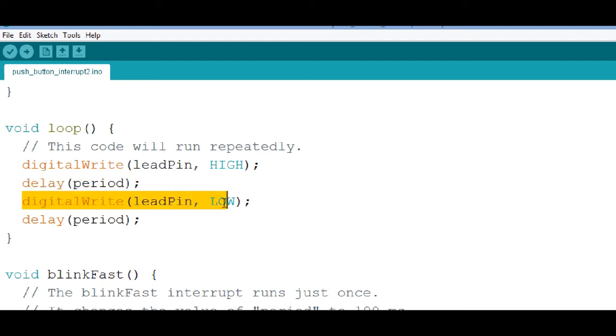And then digitalWrite to the LED pin low, turn that LED off. And again, we wait. So that's all there is to the loop, turning the LED on and off.